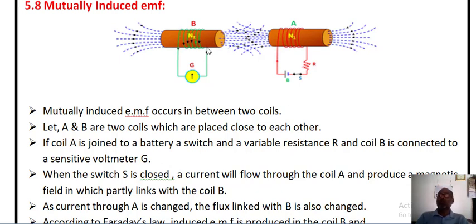It is most important that whatever flux is produced by one coil must be linked with the other coil for EMF induction to occur. Both coils A and B are placed near each other.